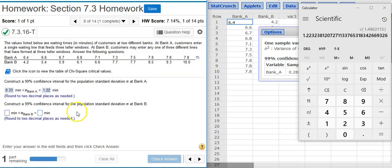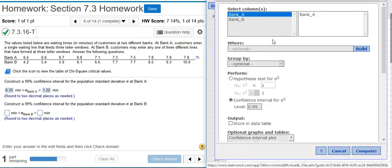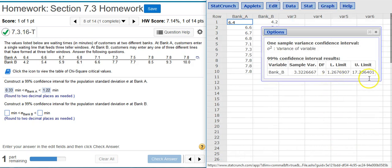Now the second part says, construct a 99% confidence interval for the population standard deviation sigma at bank B. Well, I could go through the same process again with the menu options and whatnot, or I could just come to my results window here and click on the options button located in the upper left corner. In the drop-down menu that follows, I select Edit, and I'm right back to the options window that I had previously. Now I just switch my data from bank A to bank B, hit Compute, and now I've got new numbers.